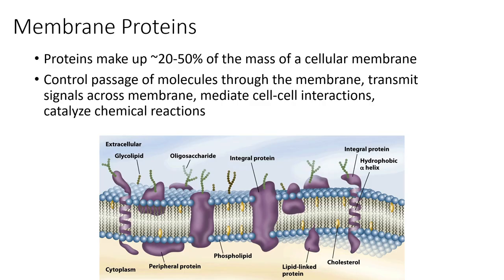Now let's talk about one of the other major components of cell membranes: membrane proteins. Proteins actually make up about 20 to 50 percent of the mass of the cellular membrane — quite a lot. These membrane proteins have all different kinds of functions: they can control passage of molecules through the membrane, transmit signals across the membrane, mediate cell-to-cell interactions, and catalyze chemical reactions. Much of this is due to the location of the protein within or next to the membrane, as well as modifications seen on some of these proteins.